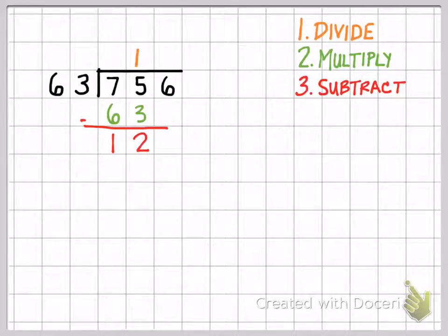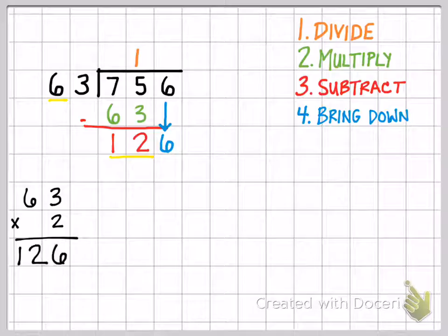After I subtract, then I bring down, in this case it's the 6. After I bring down the 6, then I have to, again, start over and then I have to divide. This time I'm going to ask myself, how many times does 63 go into 126? Now, that might not be a fact that you know off the top of your head, but there's kind of an easy way of where to start. I know that 6 goes into 12 two times. So as a starting point, I'm going to multiply 63 times 2 to see if that gets me somewhere close to 126. When I multiply that out, I get 126, so my guess was right. So I know that 63 goes into 126 two times.